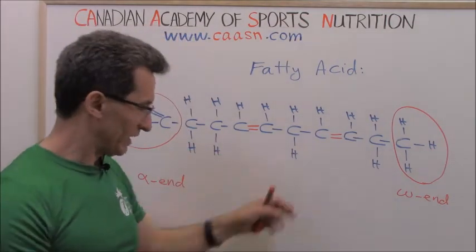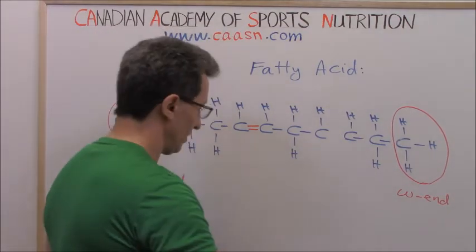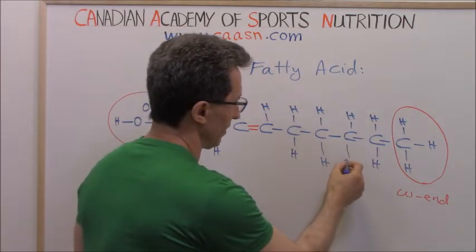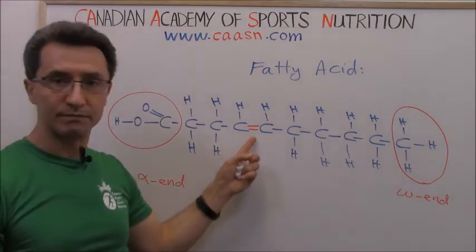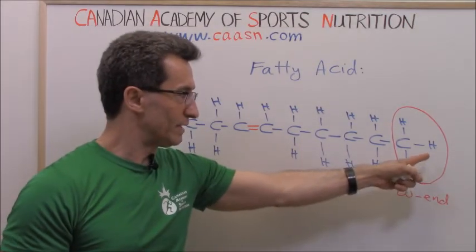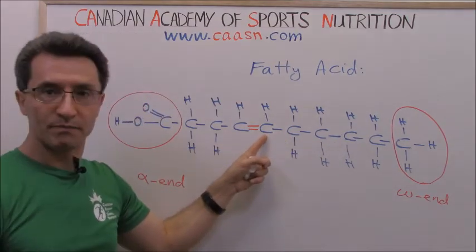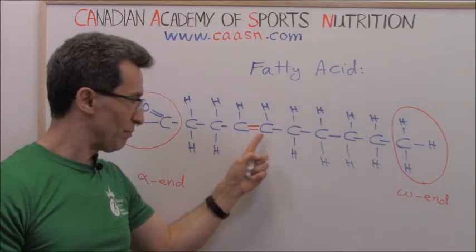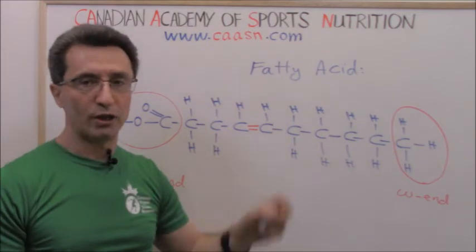Now let's take away that double bond and keep the other one to see how it works. We removed the double bond here and added hydrogen. Now we have another double bond here. If you count from the omega end — carbon one, two, three, four, five, six — the first double bond starts on carbon number six from the omega end. That's why this is called omega-6.